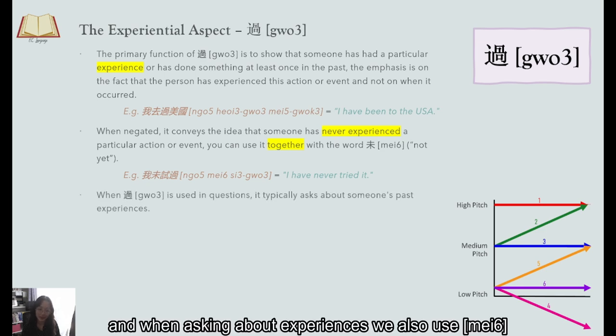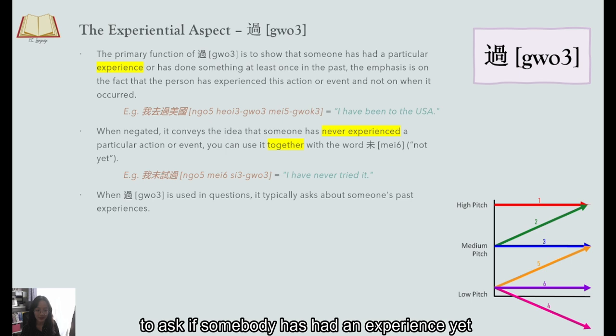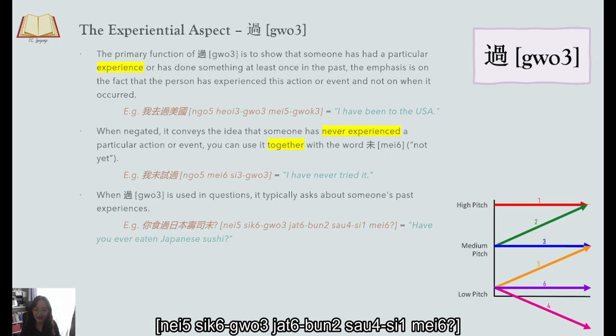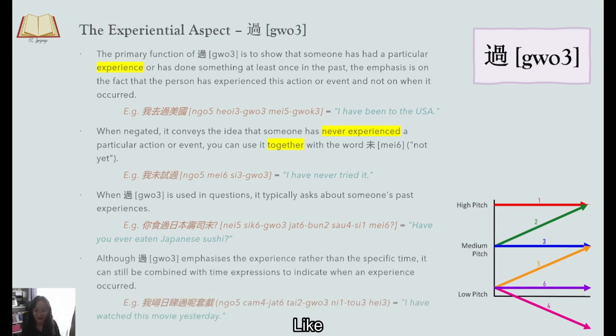and when asking about experiences we also use 未 to ask if somebody's had an experience yet like 你食过日本壽司 未 Have you ever eaten Japanese sushi? Have you yet to try? And yes, time can still be specified like 我昨日看过这套戏 I have watched this movie yesterday. Again, this emphasizes the fact that you have watched it and not the fact that it happened yesterday.